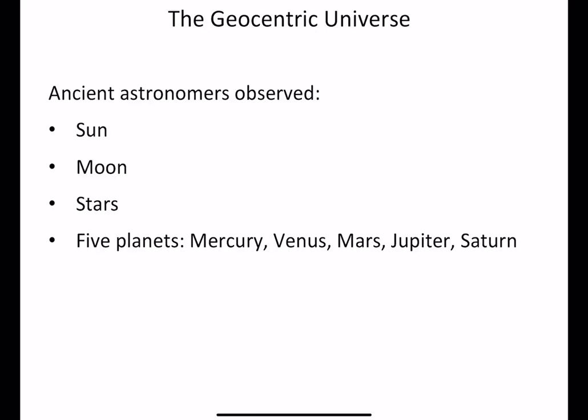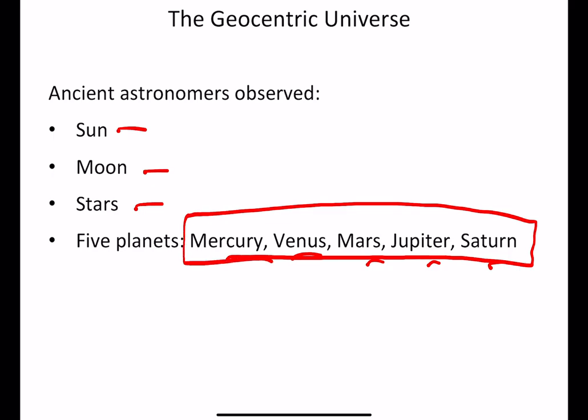Ancient astronomers observed the sun, the moon, the stars, and five spots of light we now call Mercury, Venus, Mars, Jupiter, and Saturn. These five spots drove our ancestors crazy because they were clearly different from the stars — unlike the stars, they did not twinkle, their positions kept changing, and they changed in ways that were not easy to understand.